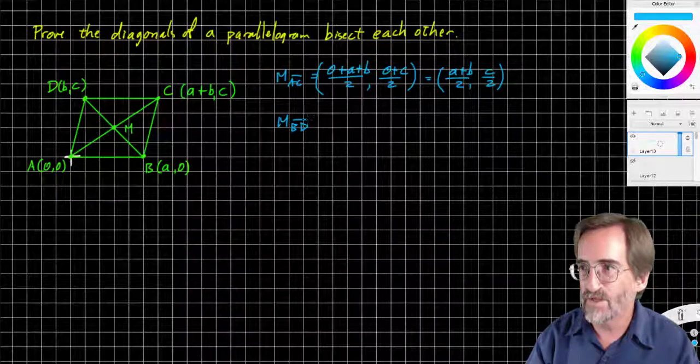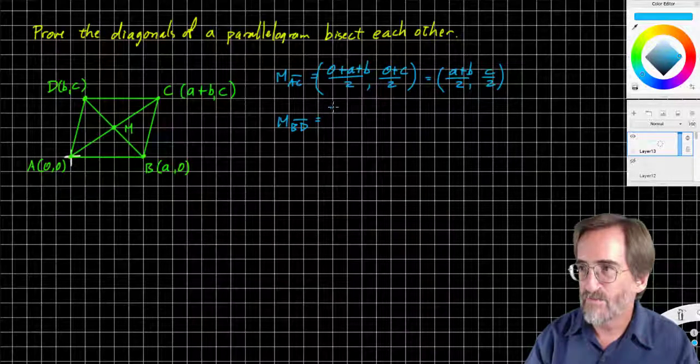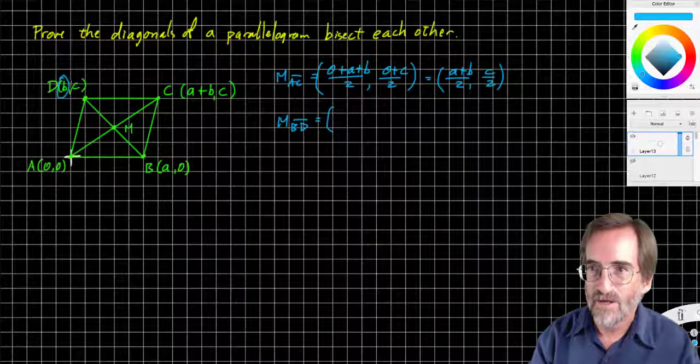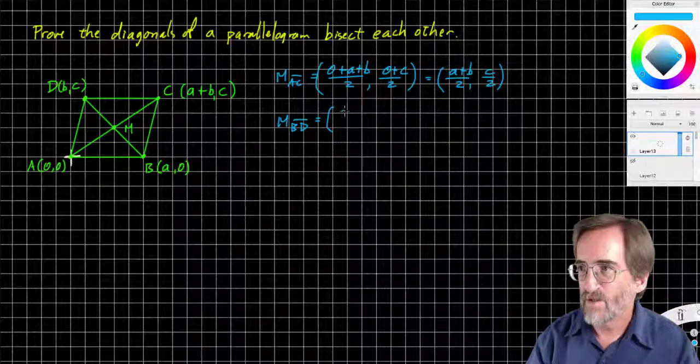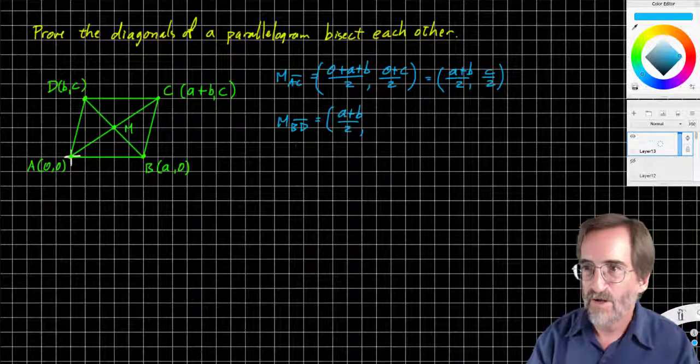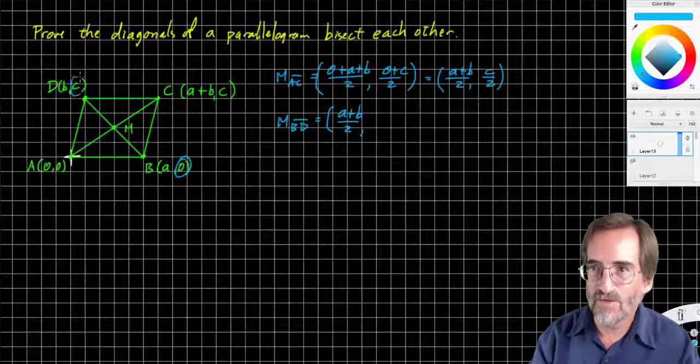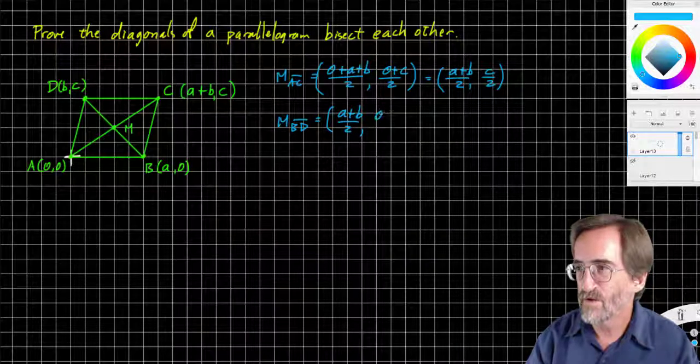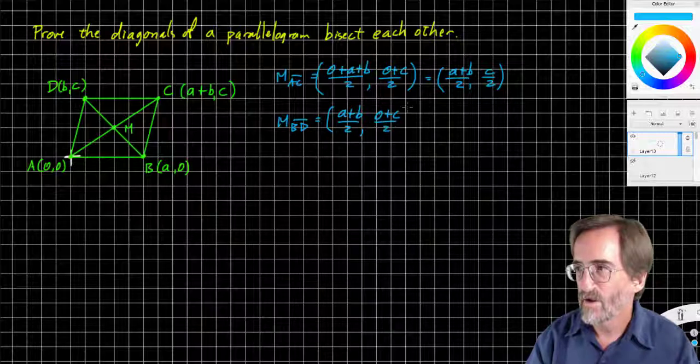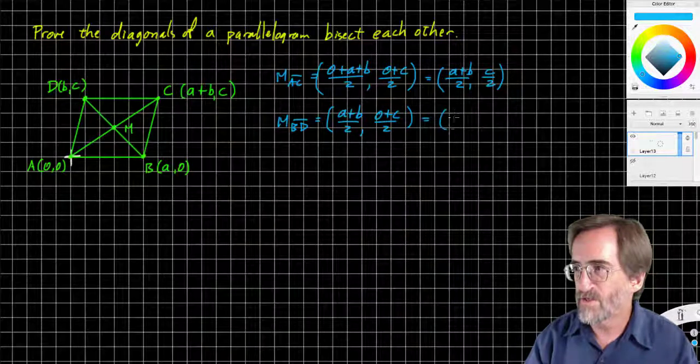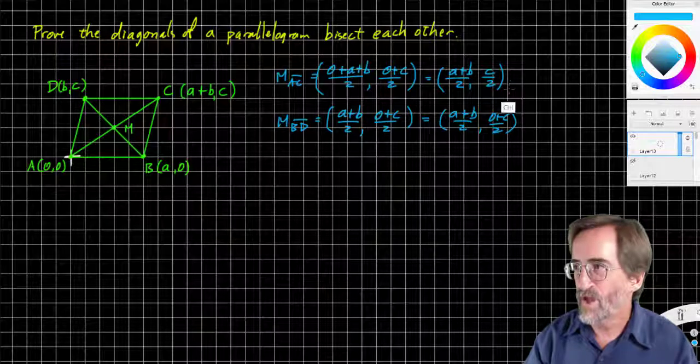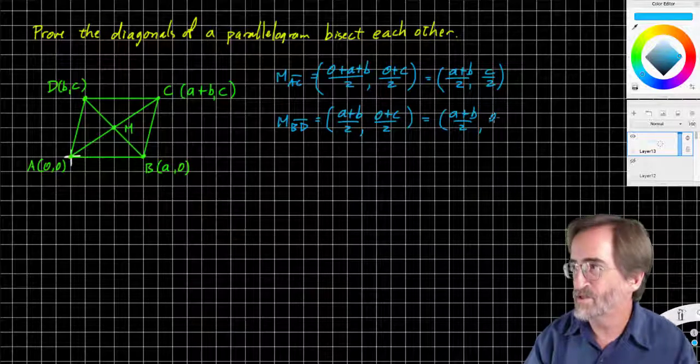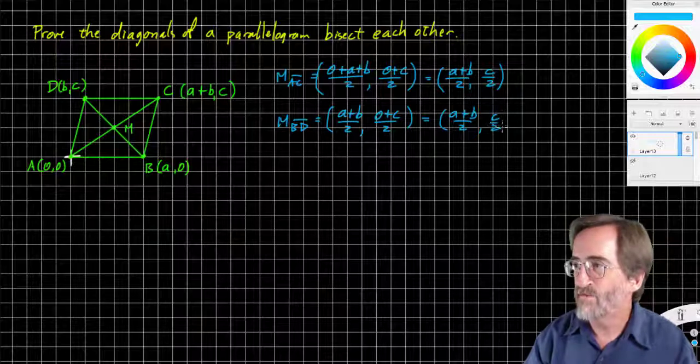Let's see if the midpoint of BD is the same. Midpoint of BD. And let's see if it is here. So add the x's. So b and a added together. Add the x's I should say. So a plus b divided by two. Add the y's together. Zero plus c divided by two. And simplify. Zero plus c is just c. So a plus b divided by two. And zero plus c divided by two.